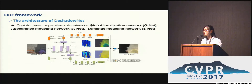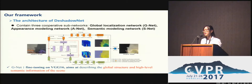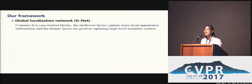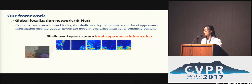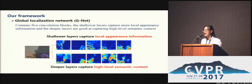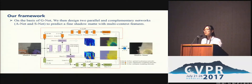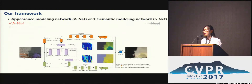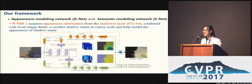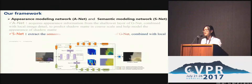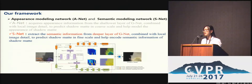The global localization network, G-Net, aims at describing the global structure of the image, and it is based on VGG16. It contains five convolutional blocks, and the shallow layers of G-Net capture high-level semantic information. On the basis of G-Net, we design two sub-networks: A-Net and S-Net. The A-Net acquires appearance information from the shallow layers of G-Net combined with local image detail to predict the shadow matte at coarse scale. The S-Net acquires semantic information from the deeper layers of G-Net combined with local image detail to predict the shadow matte at fine scale.